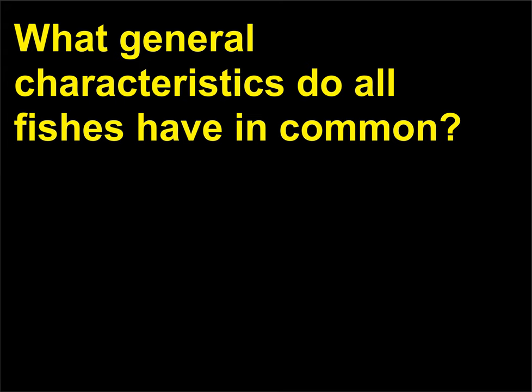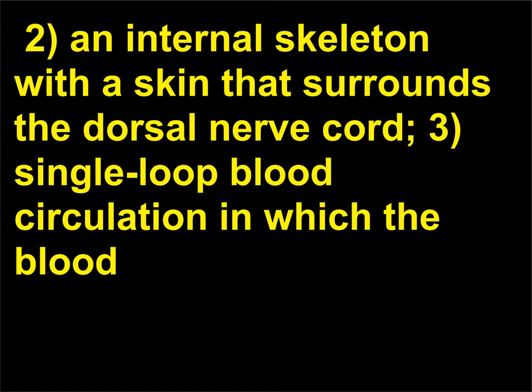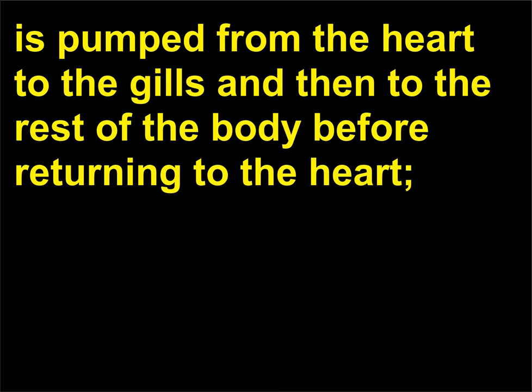What general characteristics do all fishes have in common? All fishes have the following characteristics: gills that extract oxygen from water; an internal skeleton with a skin that surrounds the dorsal nerve cord; single-loop blood circulation in which the blood is pumped from the heart to the gills and then to the rest of the body before returning to the heart.